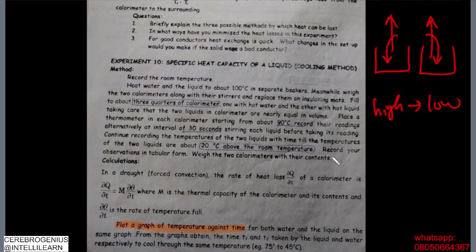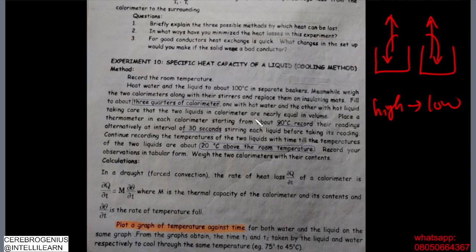You record observations in tabular form — temperature against time — then weigh the two calorimeters and their contents to know the mass. This is called forced convection: we are forcing heat to flow from the two calorimeters to the environment by ensuring they have a higher temperature than the environment.